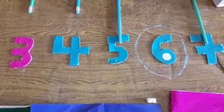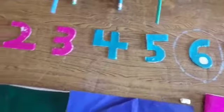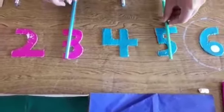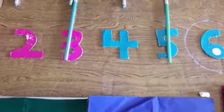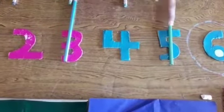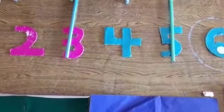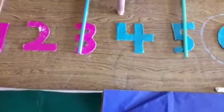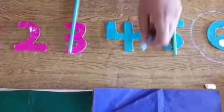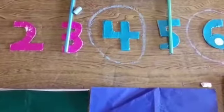Now let's choose other two numbers. I select three, then I select five. Which number is in between of three and five? Two? No. One? No. Four is in between of three and five.